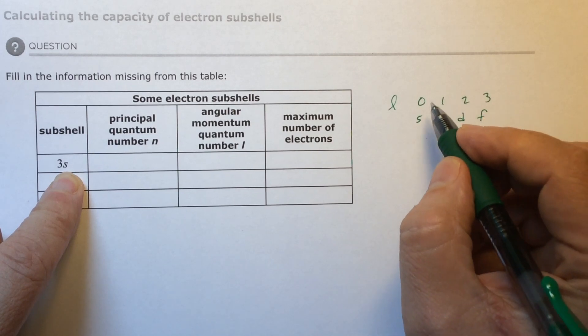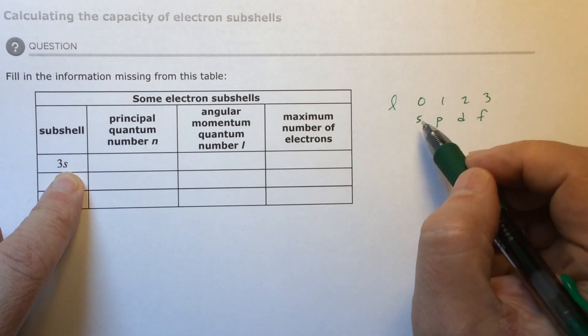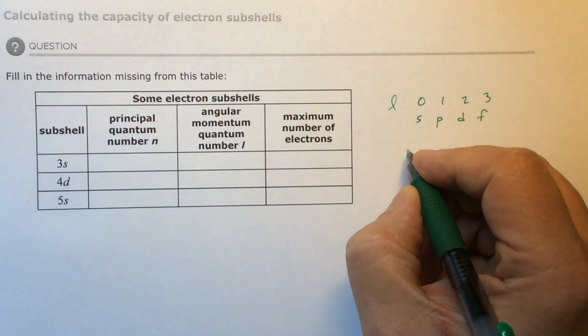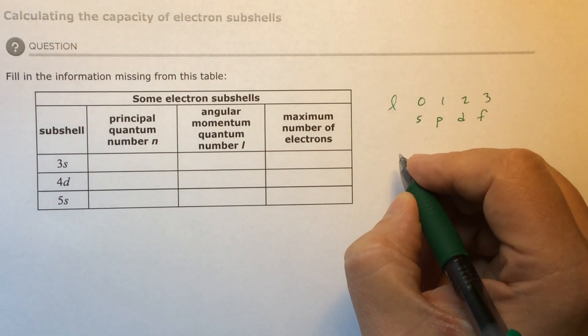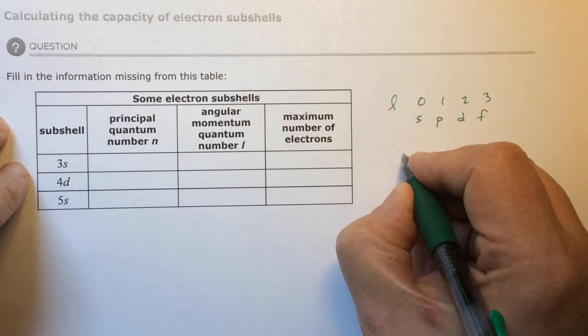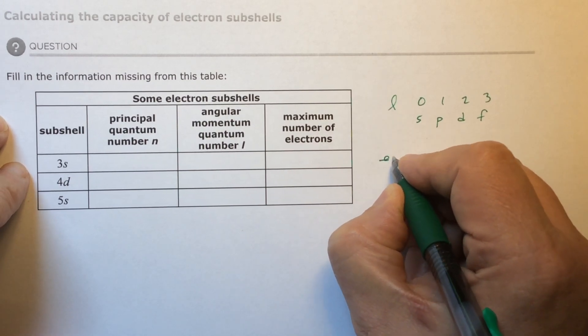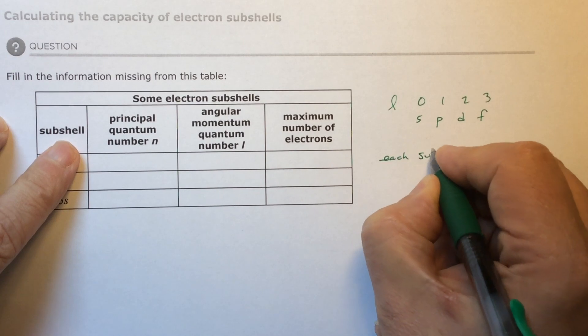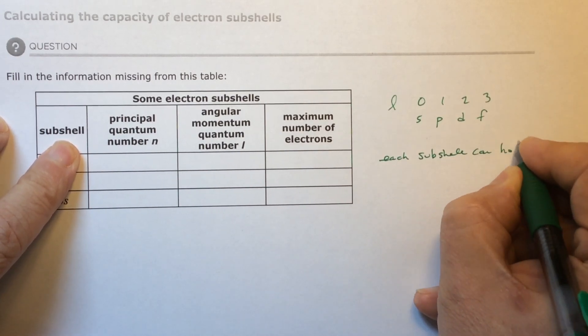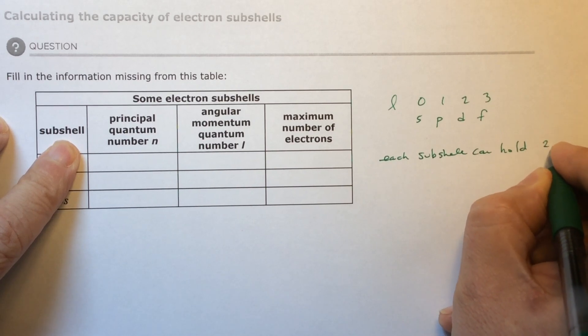So an S is going to have, it can hold two L plus one orbitals. So each subshell can hold two L plus one orbitals.